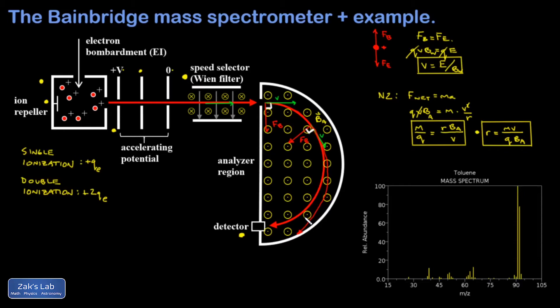For example, I can imagine gradually increasing the magnetic field in the analyzer region and detecting that slightly heavier isotope as I sweep upward in magnetic field strength, because a larger magnetic field would shrink that radius of curvature and get that particular isotope to hit the detector.